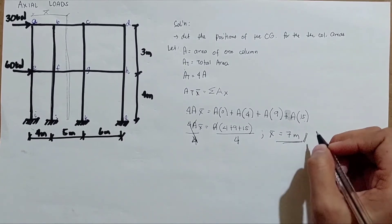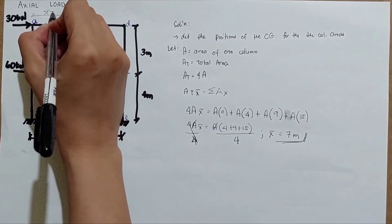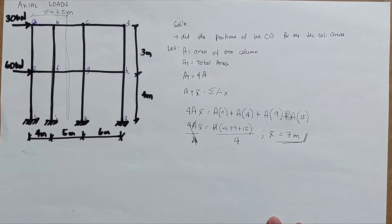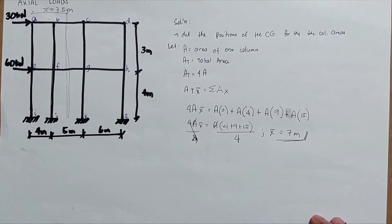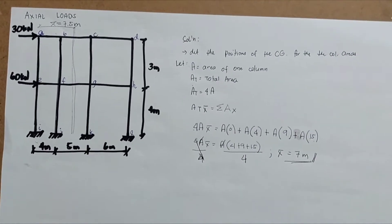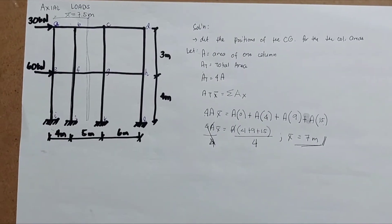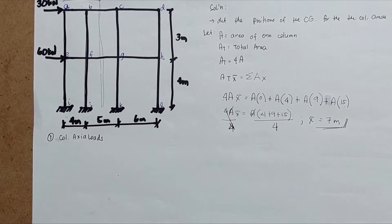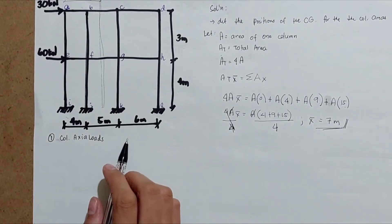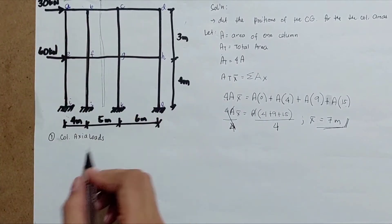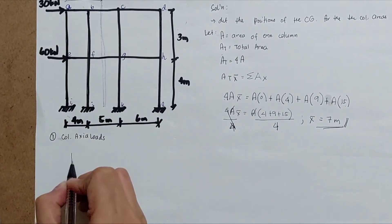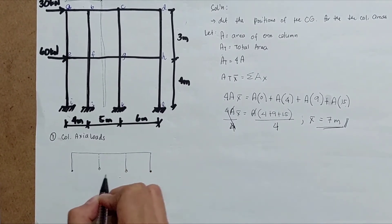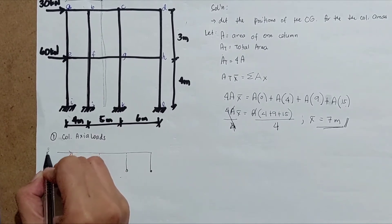Our x̄ is equal to 7 meters, so we place the CG at 7.5 meters — wait, at 7 meters. Moving on to the actual loads calculation: we use point of inflection at the center of each column. We place the 30 kN lateral load and set 1.5 meters as the half-height reference. We label the joints A, B, C, D on top and E, F, G, H on the bottom.